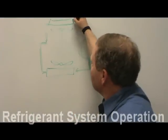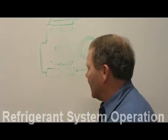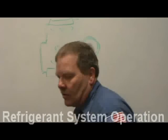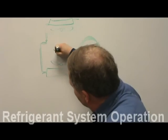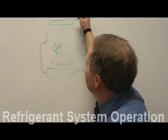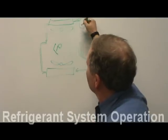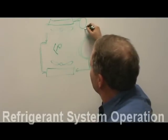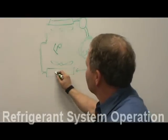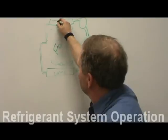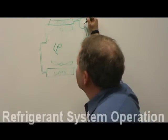Coming out of the evaporator, we've got a big line. Remember, this is a fixed orifice system. The refrigerant goes through an accumulator — it's low pressure and it goes back to the compressor. So the components are: compressor, condenser, evaporator, orifice, and accumulator.